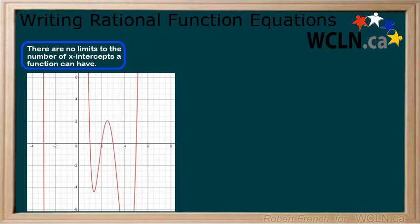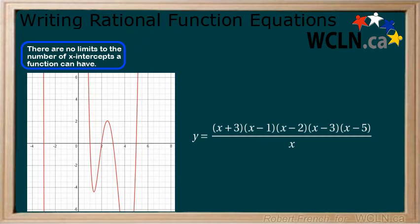Here is an example with 5 x-intercepts. When looking at the equation, we can see that each factor in the numerator lines up with an x-intercept in the graph of the function. We have x-intercepts at x equals negative 3, 1, 2, 3, and 5.